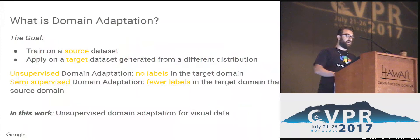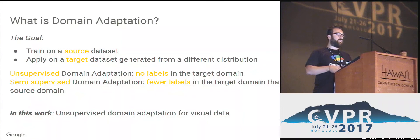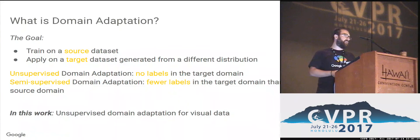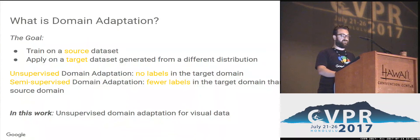I will start from the basics and tell you a little bit about what domain adaptation is. The goal is to train a model on a source dataset for which we have a lot of labeled samples, and apply this model on a target dataset which is generated from a different distribution. We talk about unsupervised domain adaptation when we have no labels in the target domain, and semi-supervised domain adaptation when we have fewer labels in the target domain than in the source domain. In this work we care about unsupervised domain adaptation for visual data, although we do have experiments in our paper for semi-supervised domain adaptation as well.